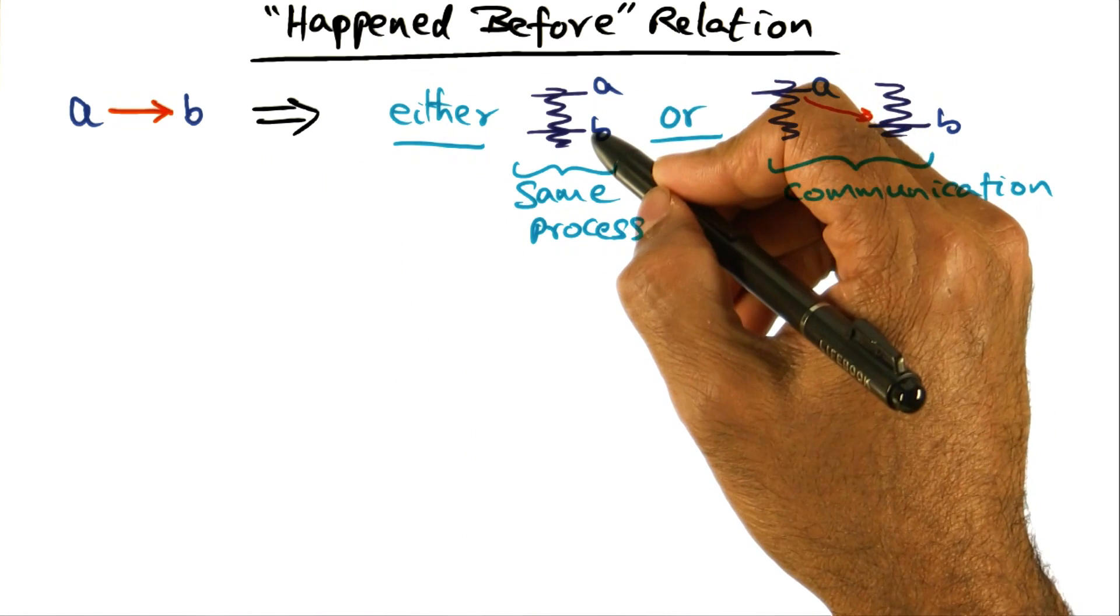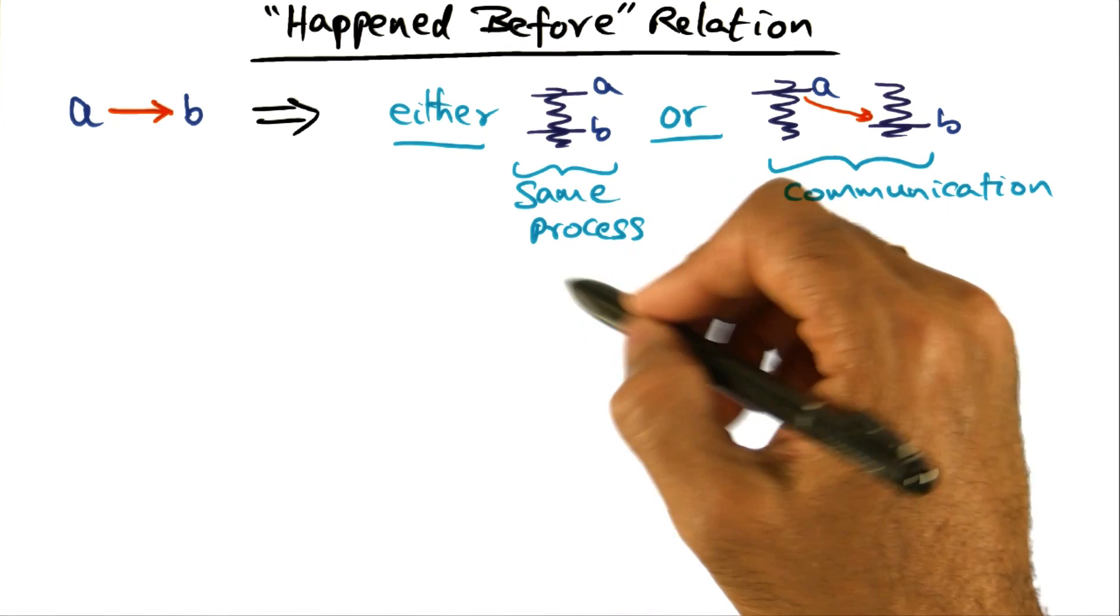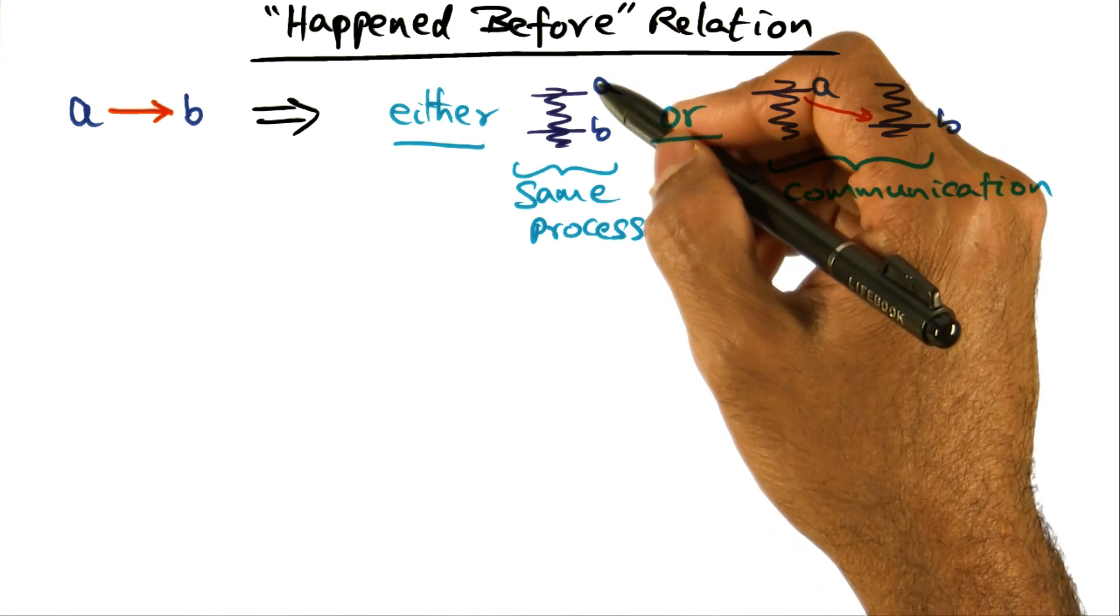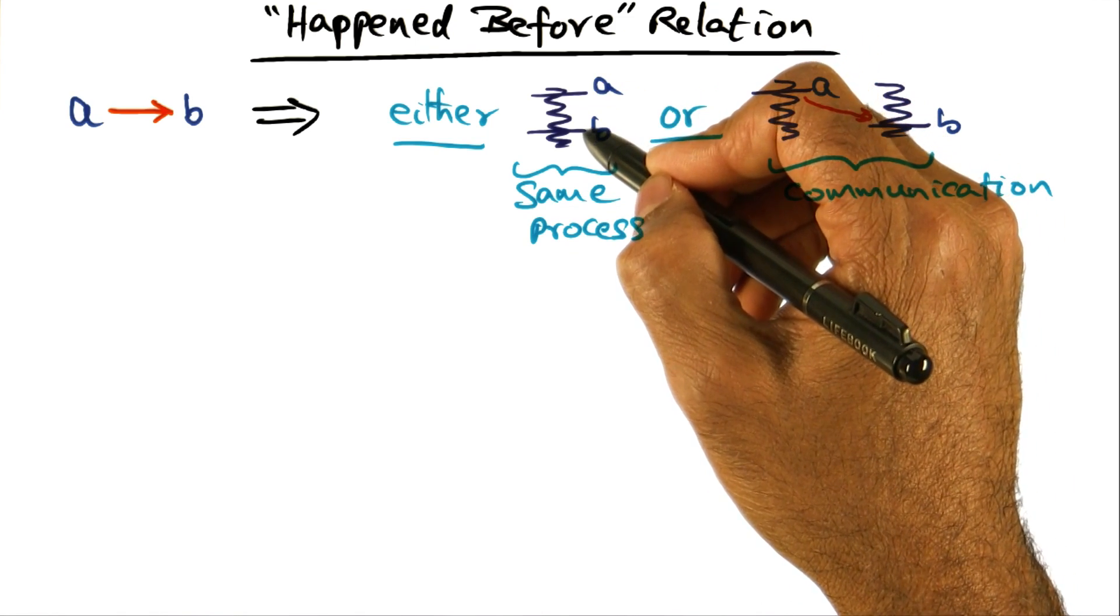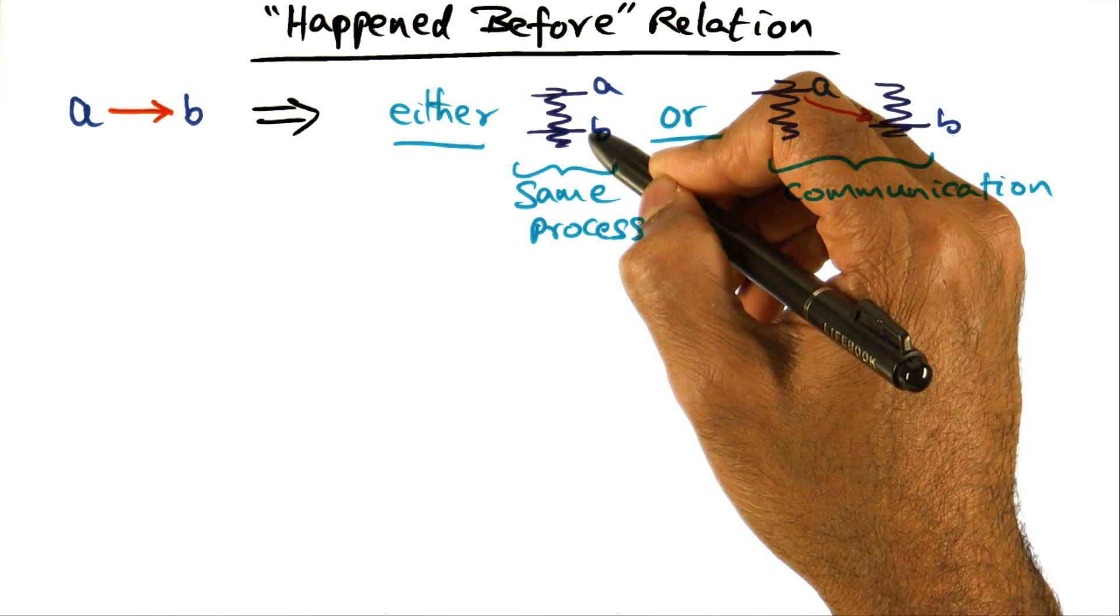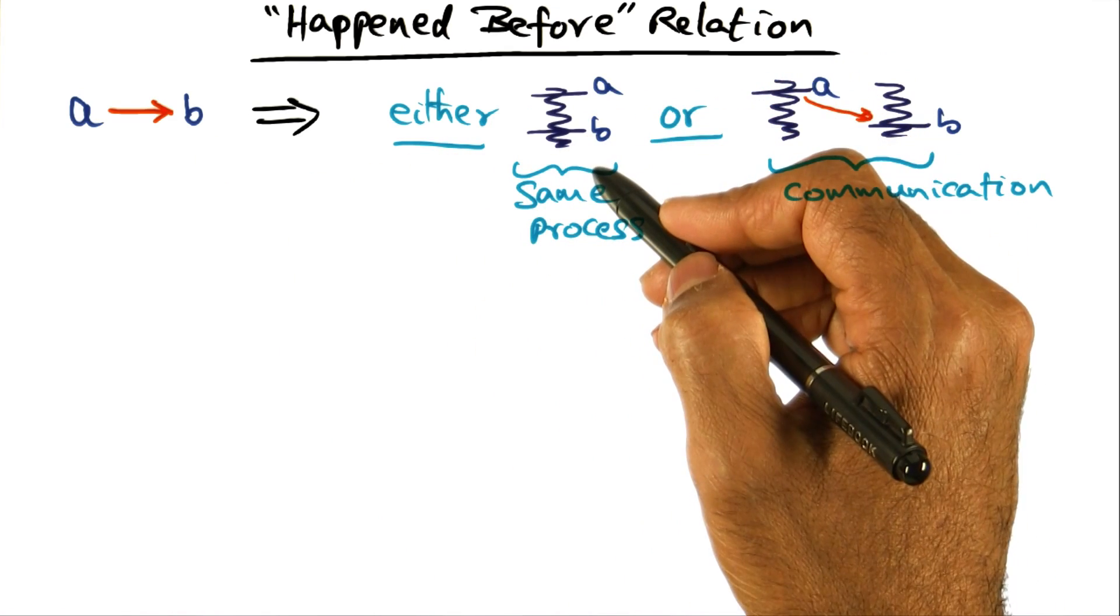Either A and B are events in the same process, which means given our belief that a process is sequential, A must have happened before B. If it is a textual order, A is here and B is here, then A must have happened before B. And that's one possibility.